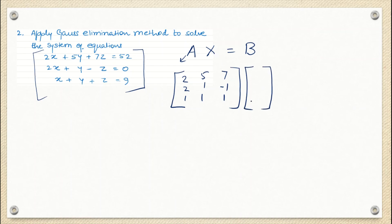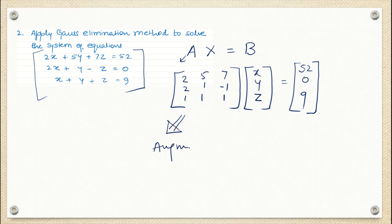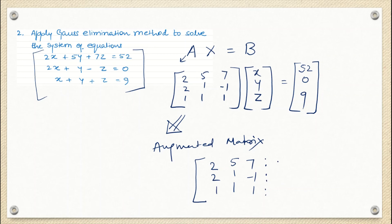X is the column matrix where I write down the variables X, Y, Z. B is the column matrix containing the constants from the right hand side of the system: 5, 20, 9. I then write down the augmented matrix — the coefficient matrix enlarged by one more column containing the constants.